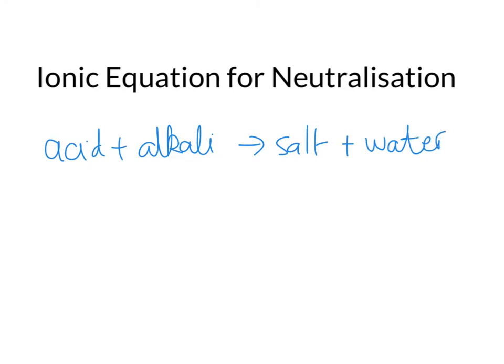Now, all the examples of acid plus alkali gives you salt plus water. They always have water at the end. The salt might be different because the acid and the alkali are different, but water is always made. That is the key to understanding this ionic equation for neutralization.